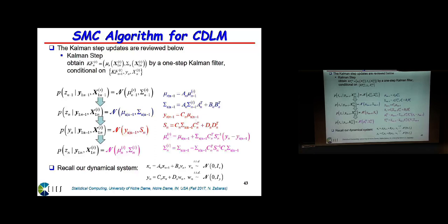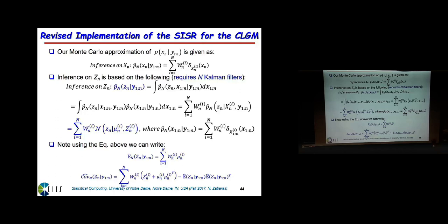The objective was to calculate the distribution of X_{1:n}. With the previous algorithm, you get a Monte Carlo approximation: particles at time n with importance weights w_n. If someone says they want the filtering distribution of Z_n given all data to time n, you integrate out X: P(Z_n | Y_{1:n}) equals the sum over particles of weights times P(Z_n | X_n^i, all data). This is a Gaussian with mean mu_{n,n}^i and covariance sigma_{n,n}^i from the Kalman filtering equations.